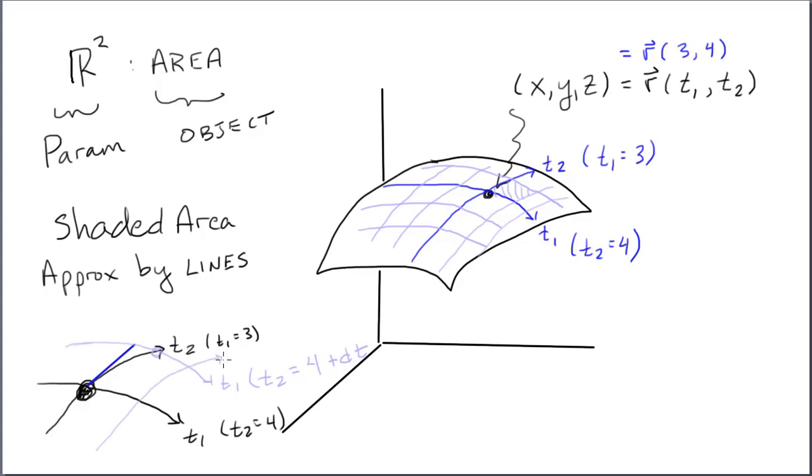Then I'll do the same for T1. Change it by DT. T2 varies, which will give me a little tangent line piece in the T1 direction.